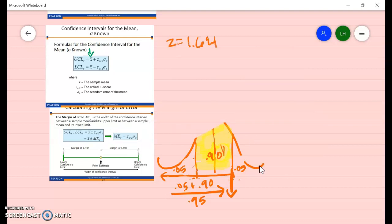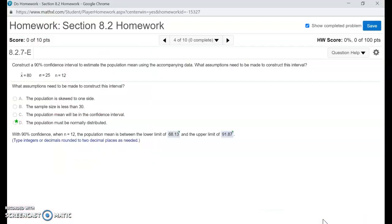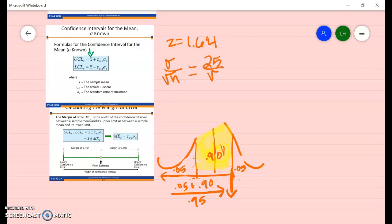Our margin of error is going to be the standard deviation divided by the square root of n. And the standard deviation here is 25 and n is 12. So 25 divided by the square root of 12. And you're going to round to two decimal places. So that's what we're going to do. 7.22.